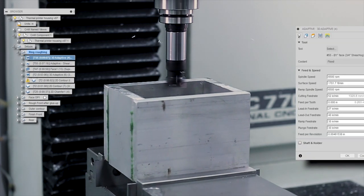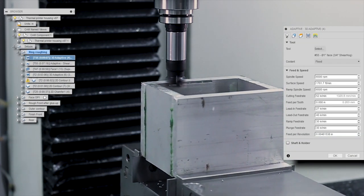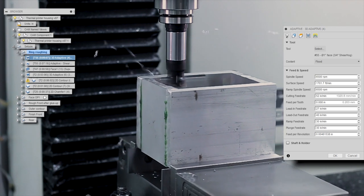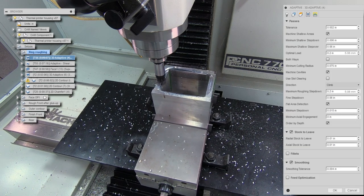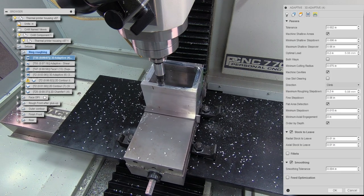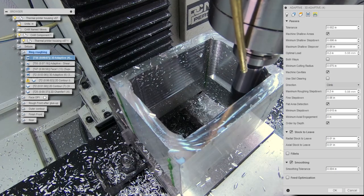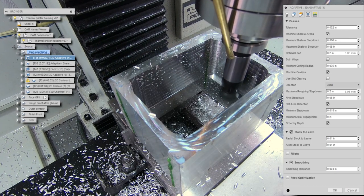Starting off by roughing the ring 6,500 RPMs, about 52 inches per minute, which is 8,000th of an inch feed per tooth, 0.2 inch optimal load and 0.2 inch roughing step down. That cleans up the top and we'll start roughing out the inside.